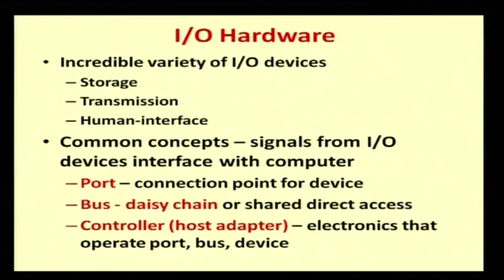For I/O Hardware, we require an incredible variety of I/O devices. We require storage, transmission, and human interface. When I type a key from the keyboard, it gets stored in the page and internally in the hard disk. If I press key 'A', it takes one byte and that byte gets incremented in memory. If I delete, it gets decremented from memory. That is where storage comes into effect.